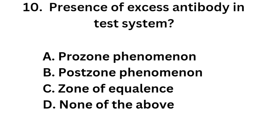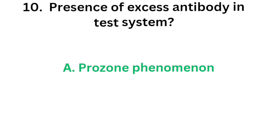Question 10. Presence of excess antibody in a test system: Option A, Prozone phenomenon; Option B, Postzone phenomenon; Option C, Zone of equivalence; Option D, None of the above. The correct answer is Option A, Prozone phenomenon. Presence of excess antigen is the Postzone phenomenon.